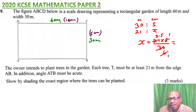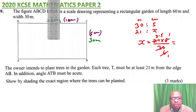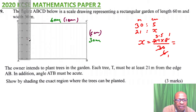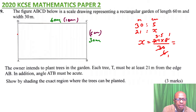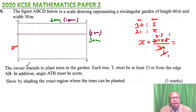You measure 3.5 centimeters using a ruler, and you'll be able to find that point. Then you draw a straight line from that point — a line parallel to AB. This marks the boundary that is 21 meters from edge AB.